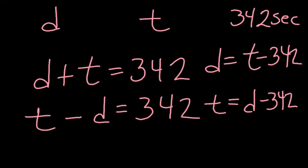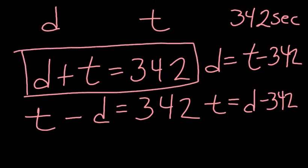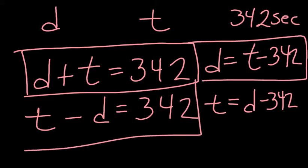We have to take D, which is the difference between the personal best and the qualifying time. We have to take T, which is the athlete's personal best time, your best time. And the qualifying time, which is 342 seconds and make an equation. I have written four different equations. One of these is the correct one.